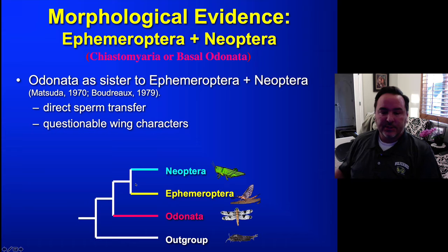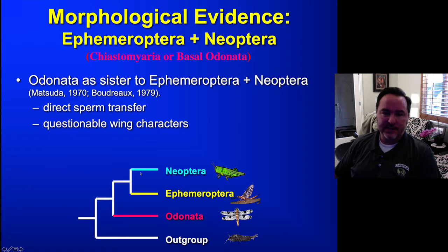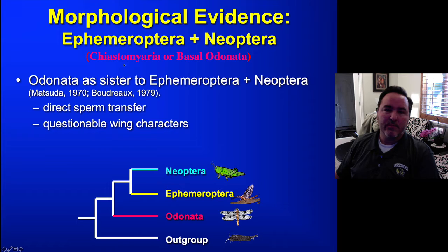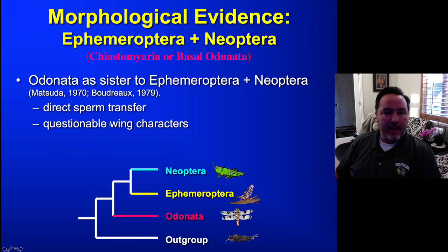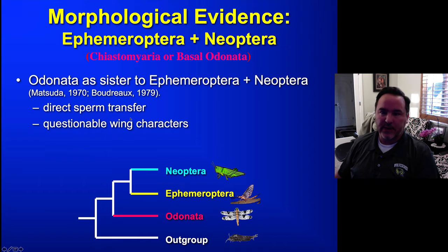The third option is that you have Odonata as sister to Ephemeroptera plus Neoptera. This is sometimes called the basal Odonata hypothesis, or the Chiastomeria hypothesis, because Neoptera plus Ephemeroptera equals Chiastomeria. There are a few morphological characters that also support this relationship.